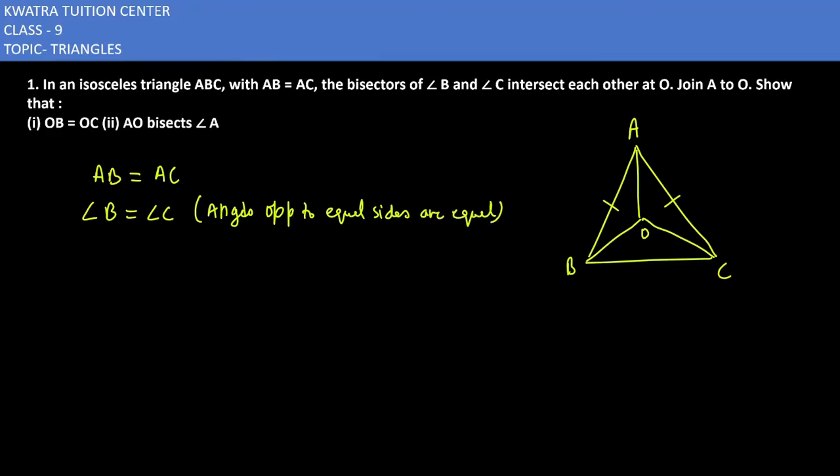Now angle B and angle C. Then what do we have? Half angle B and half angle C. Half angle B, half angle C. What is this part? Which is angle OCB.